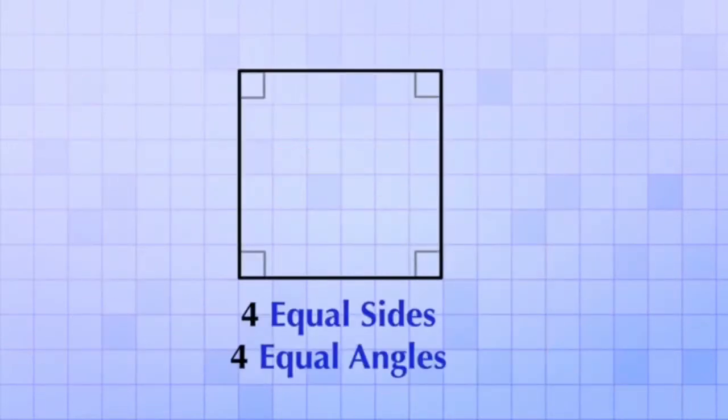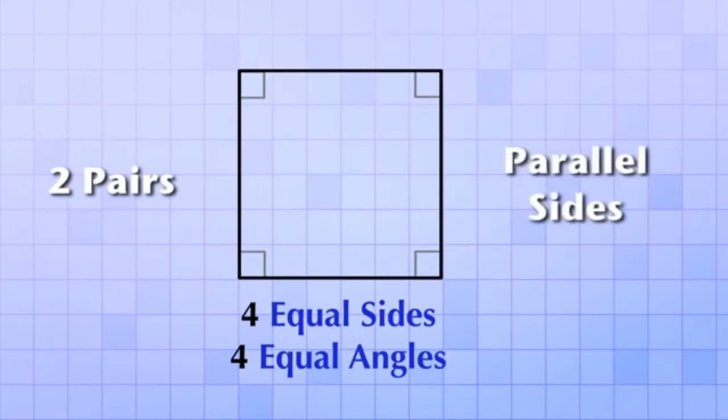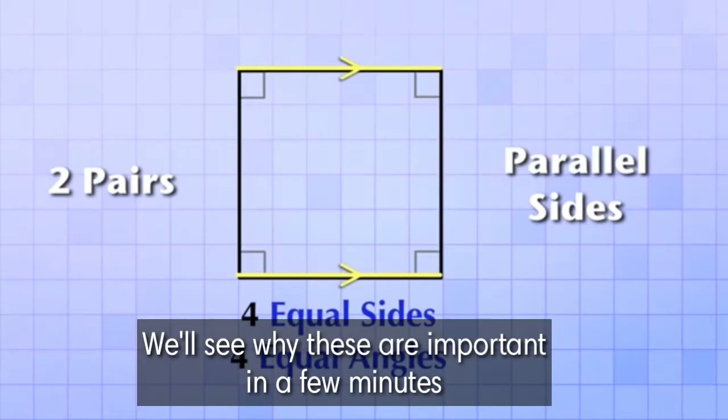Notice also that a square is formed by two pairs of parallel sides. These two opposite sides are parallel, and these two opposite sides are parallel. We'll see why that's important in a few minutes.